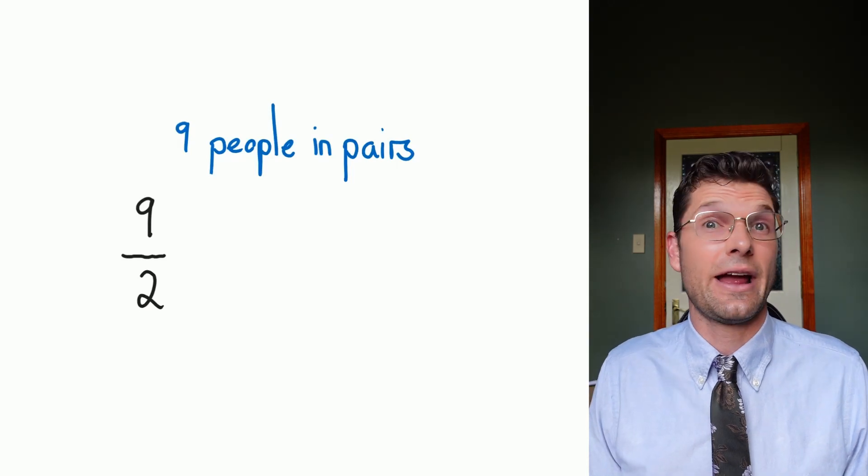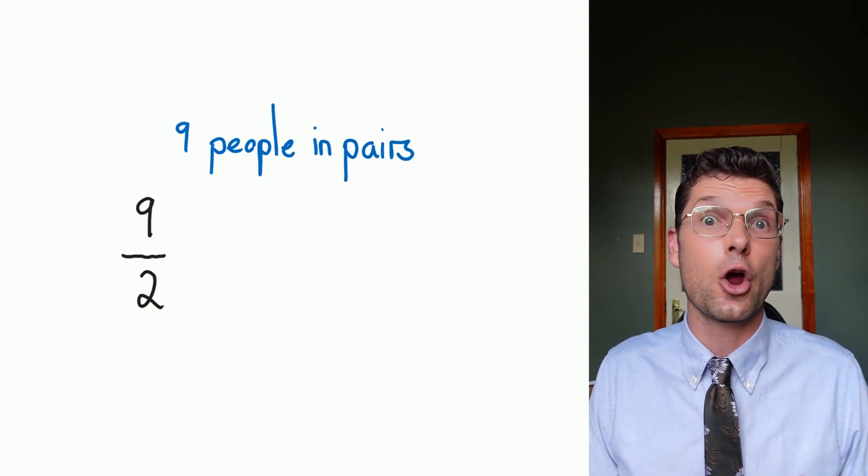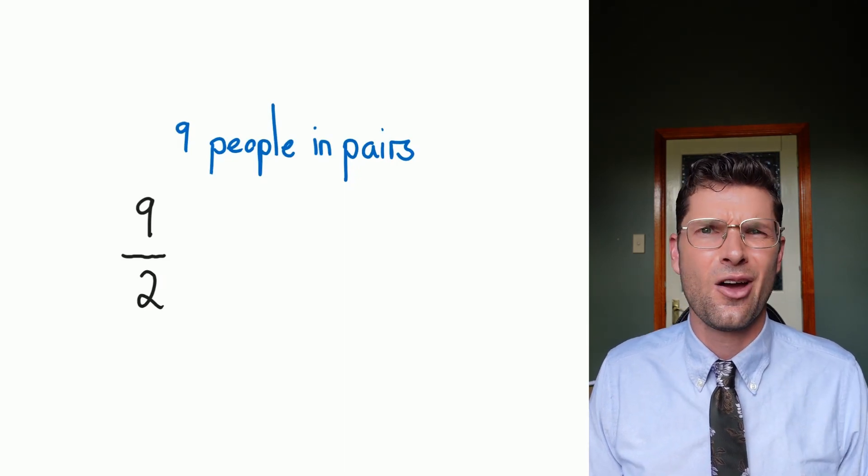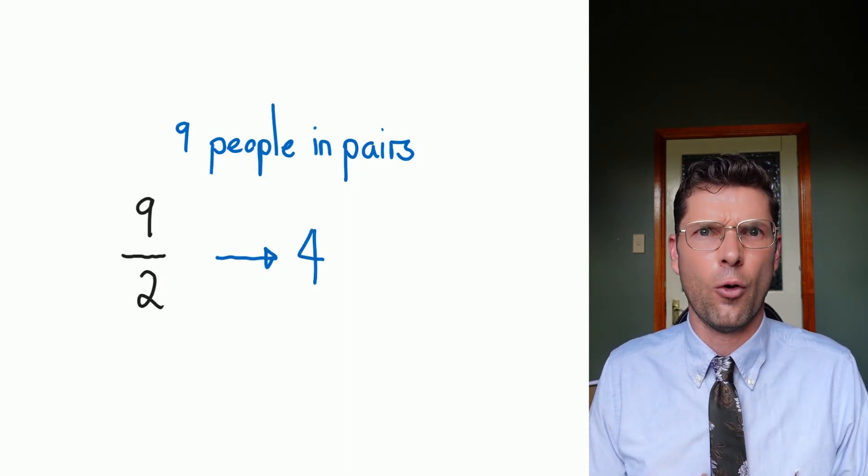Another example is you could be playing a game where we need to be in pairs, and we've got nine students, and we've gotta divide them into groups of two. So nine divided by two. I could go, oh, well, I'll have four full pairs, right?